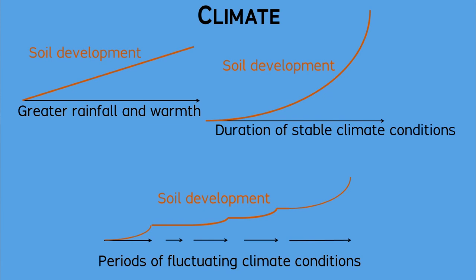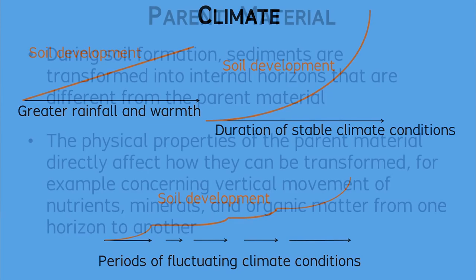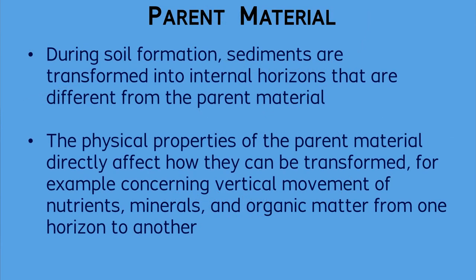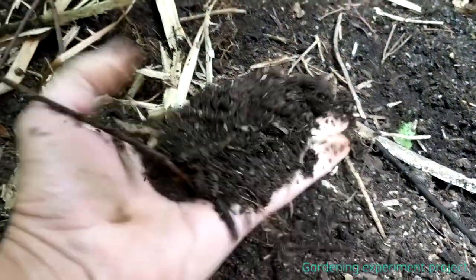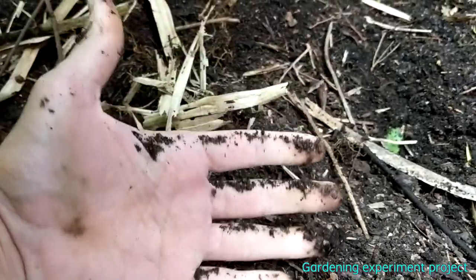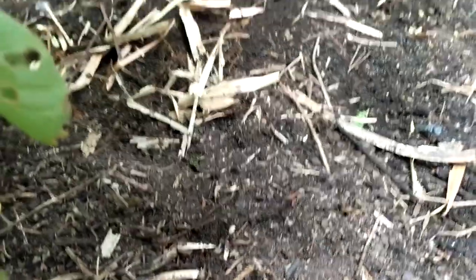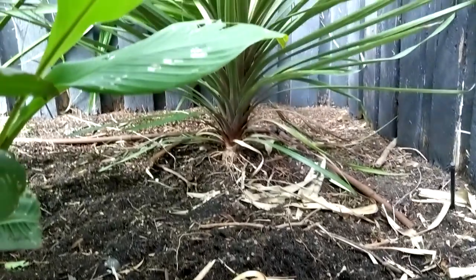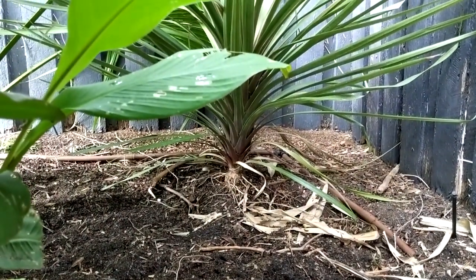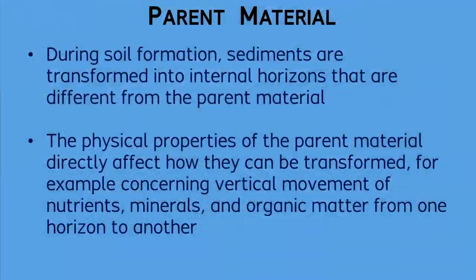As you have seen already, the parent material of a sediment is transformed through time into a soil. Accordingly, the physical properties of the parent material can create varied outcomes of how a soil can develop. If the parent material consists of clays and silts with high water retention and cohesion, then organic growth can be stable and strong with the result of thick soil horizons.